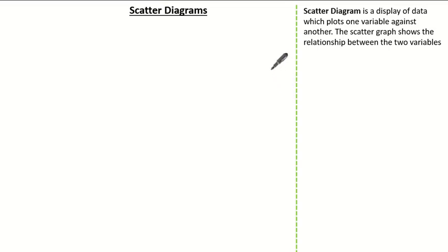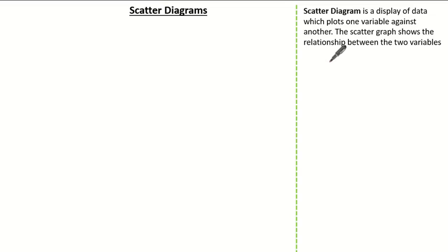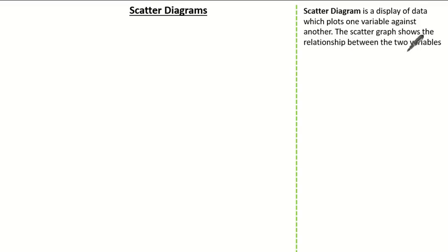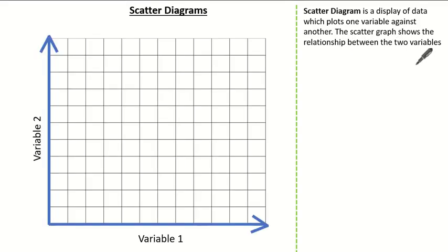Hello everyone and welcome to this tutorial on scatter diagrams. A scatter diagram is a display of data which plots one variable against another. The scatter graph shows the relationship between two variables. The way in which the points are scattered identifies the connection or correlation between these two variables.